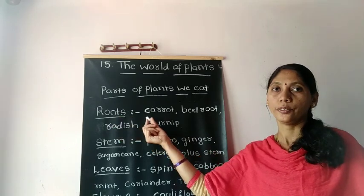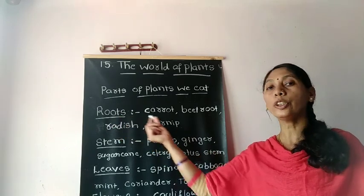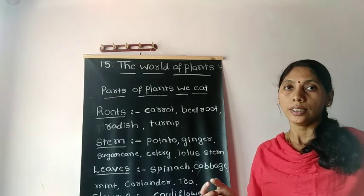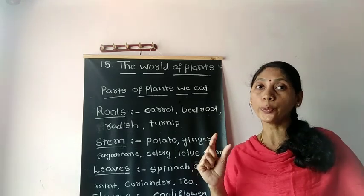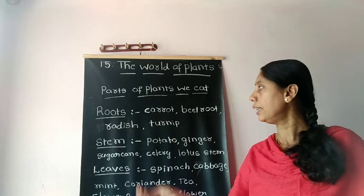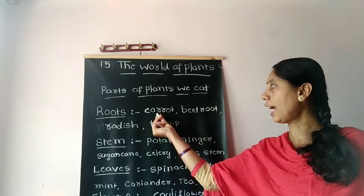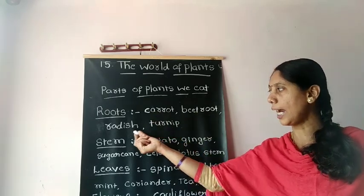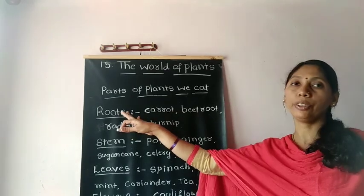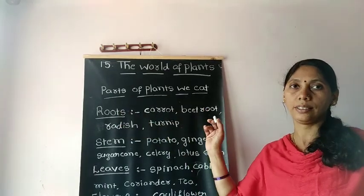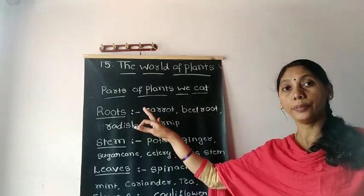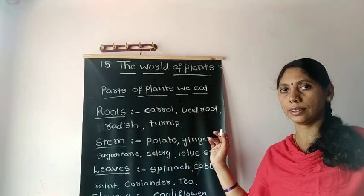First one is roots. We eat some plant roots as vegetables — like carrot, beetroot, radish, and turnip. These are all roots of the plants. We eat them as vegetables.